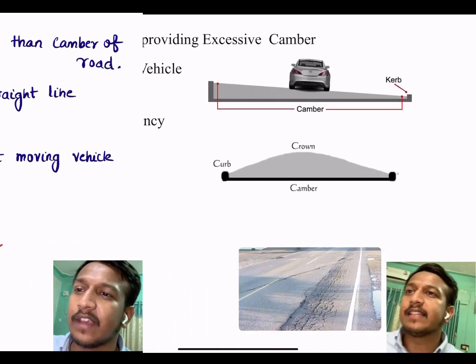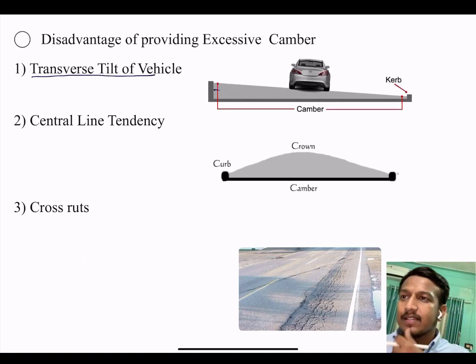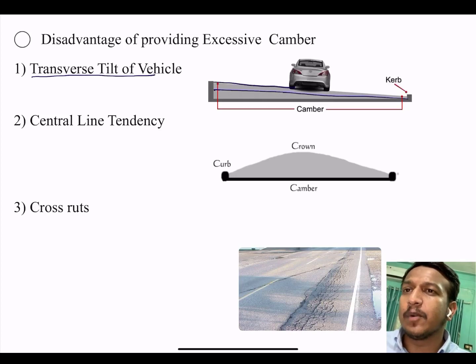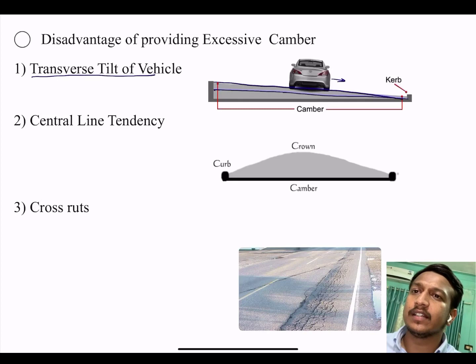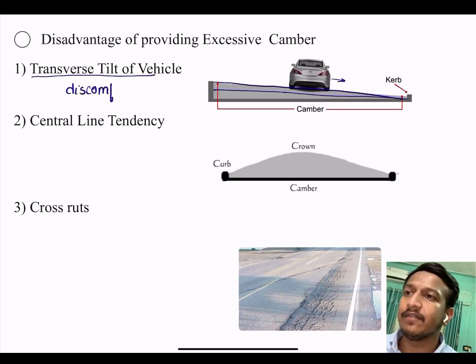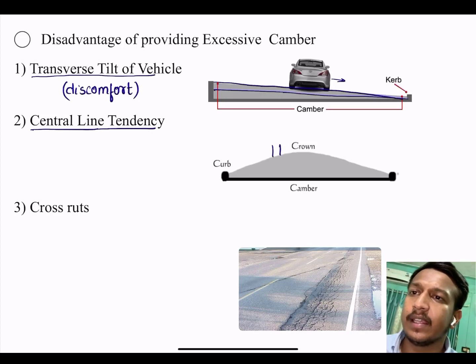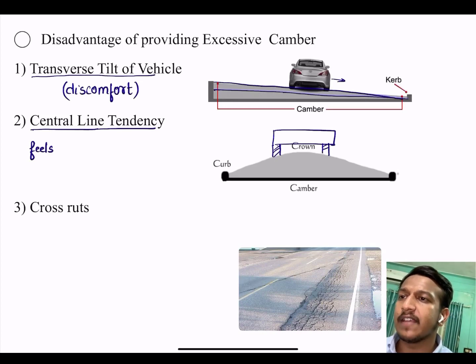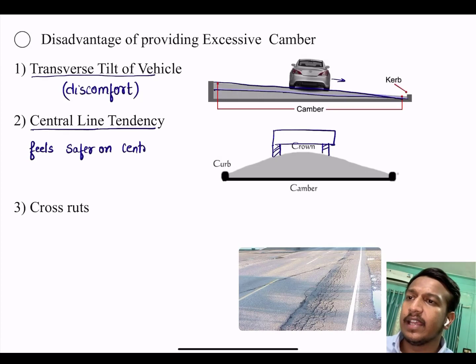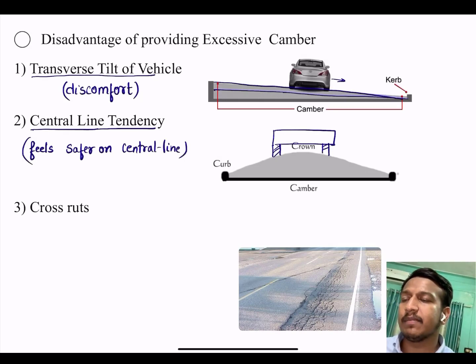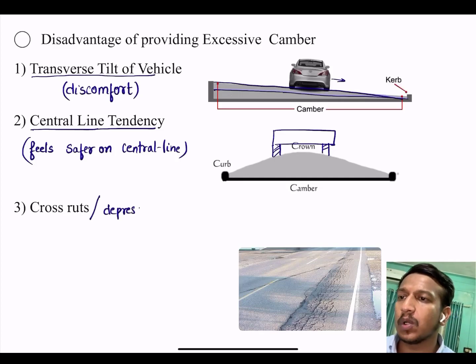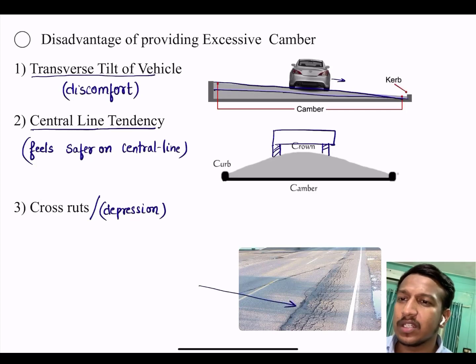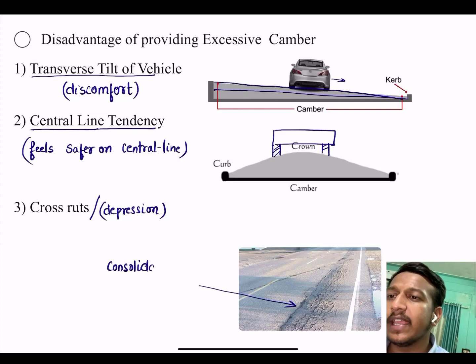Disadvantage of providing excessive camber. First is transverse tilt of vehicle. If you provide more camber, then your vehicle will feel tilting over the surface, which is a sign of discomfort. Second is central line tendency. When you provide more camber, the vehicle tends to move towards the center of the road, feeling safer on the central line. And third is cross ruts, also called potholes or depression, which is consolidation of the road layers.